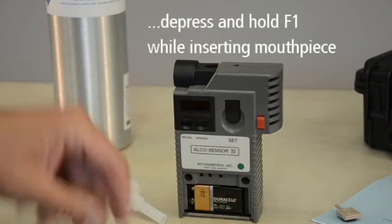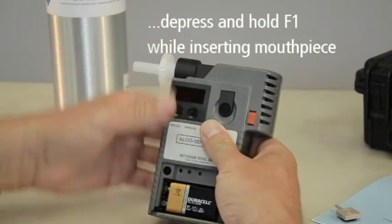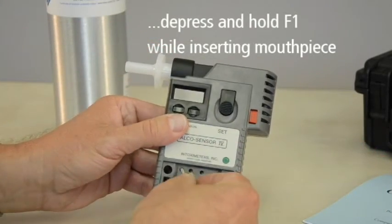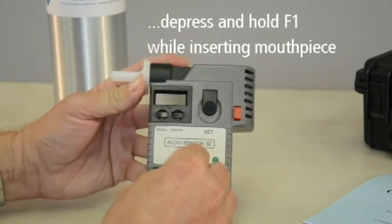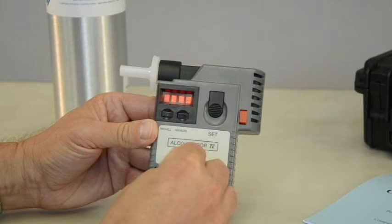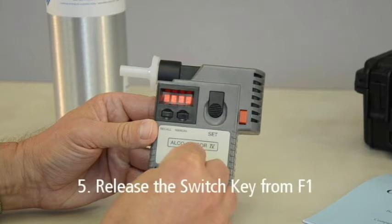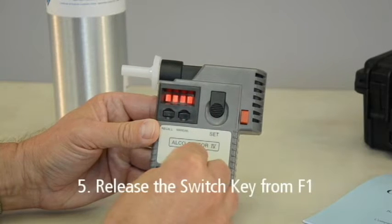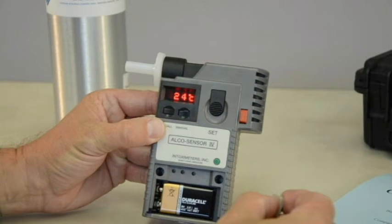Using the switch key, depress and hold F1, which is the far left hole, while inserting a new mouthpiece. Four solid blocks will appear on the display. Now release the switch key from F1.